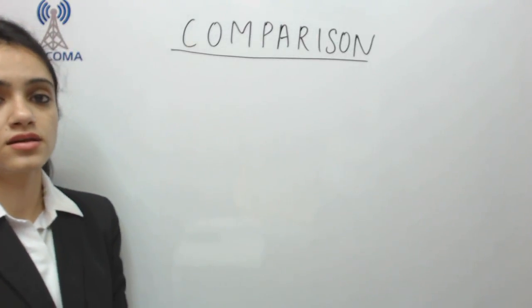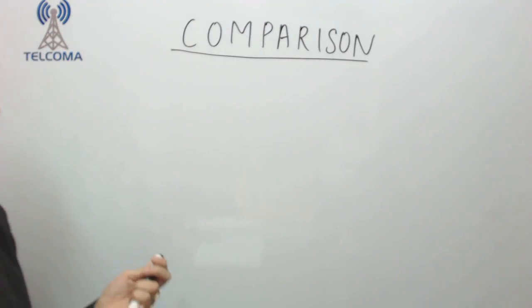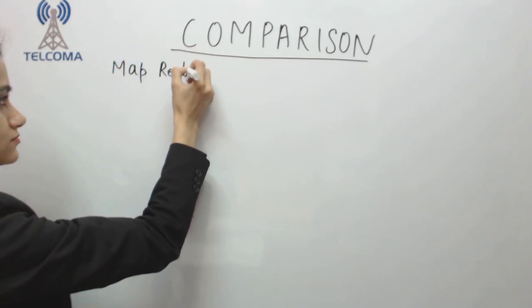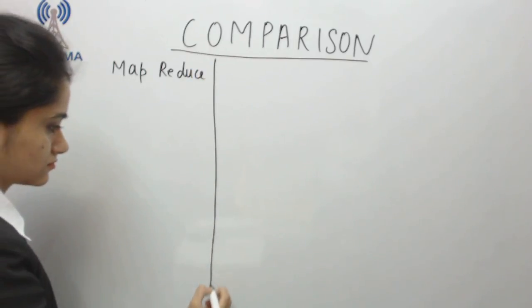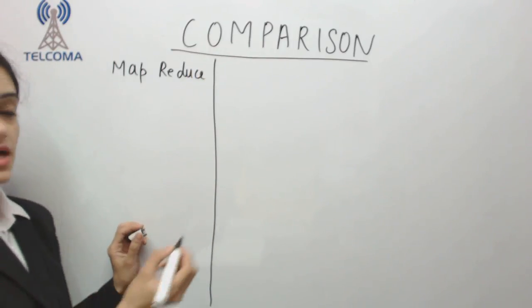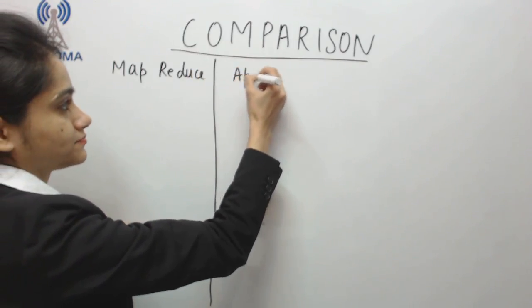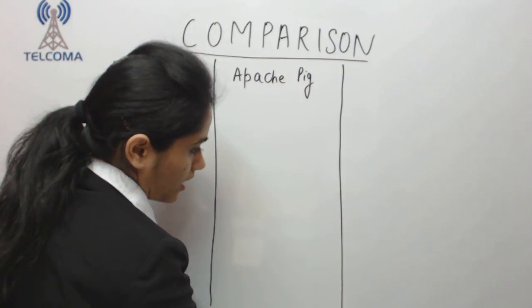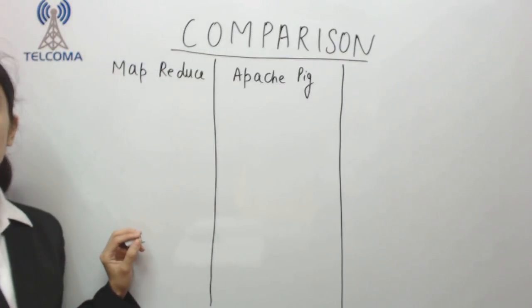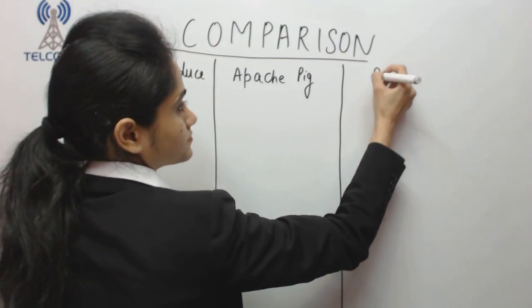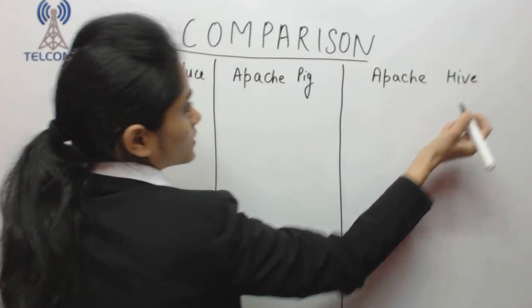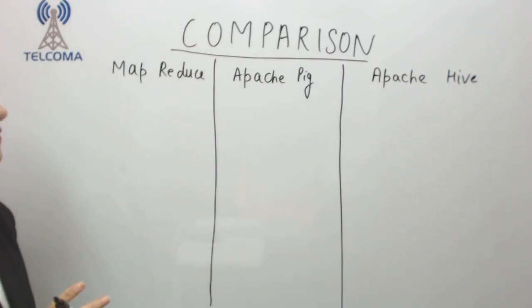Hello. In today's class we are going to discuss the comparison between three tools: MapReduce, Apache Pig, and Apache Hive. We will discuss the comparison between the three.